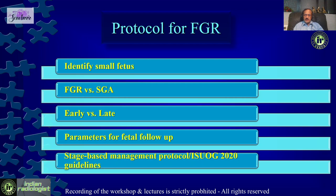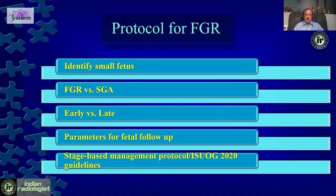Once you have identified a small fetus, we need to differentiate between what is known as SGA or small for gestational age versus FGR or fetal growth restriction. We need to look at what time we have picked it up — whether it's early or late. Once you have diagnosed something as SGA or FGR, we need to look at some parameters to follow up the fetus and judge their well-being. Finally, based on all findings, we need management decisions — either stage-based management for early onset FGR or following the ISUOG guidelines published in August 2020.